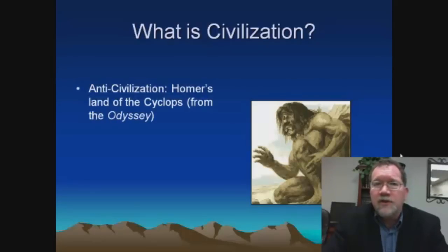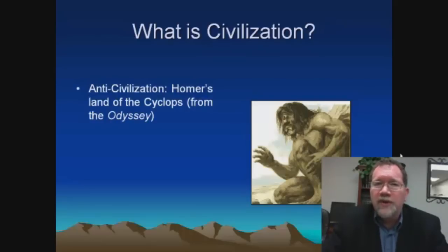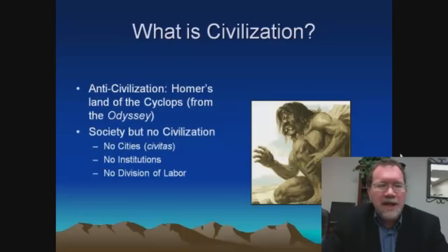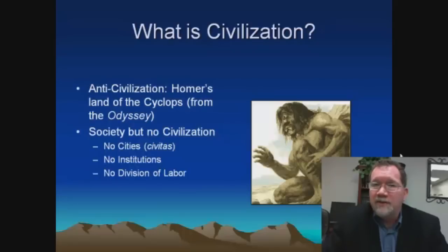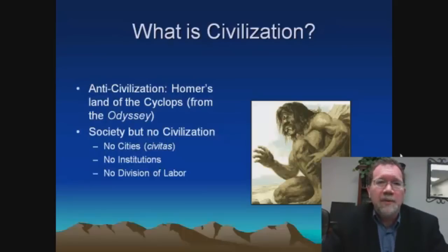To the Greek mind in the 8th century BC, when Homer probably wrote this passage, this would have been a perfect description of what we might call anti-civilization — the antithesis of civilized life as the Greeks conceived it. What about this passage shows that anti-civilization? Well, the Cyclops clearly have society, some sort of interaction with one another, but it is not civilization. The Cyclops do not live in cities. Each family is isolated, and life in cities is considered a key component of civilized life. In fact, our very term civilization comes from the Latin word civitas, which refers to the city.